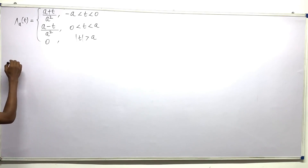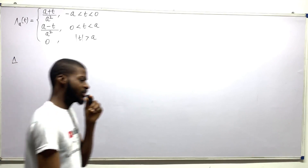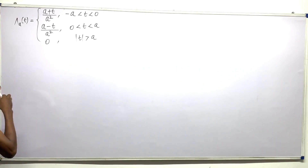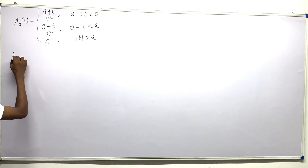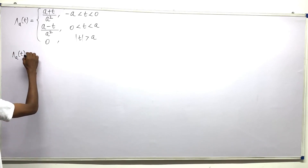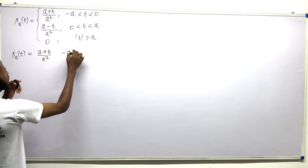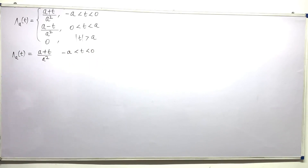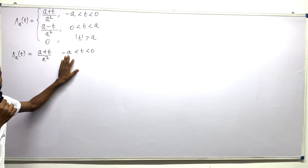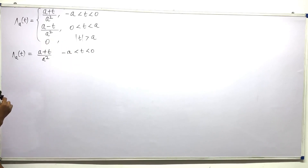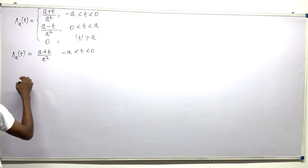So we have this triangle symbol — it means triangle — and starting from that, the triangular function of something like this is equal to (a + t) divided by a squared, and a is from minus a to zero. Please take note that a is just an arbitrary number — you can set a as one, it's your choice. A is just an arbitrary width or arbitrary length.